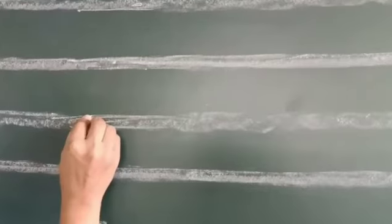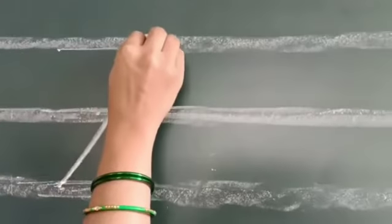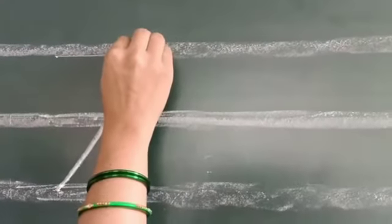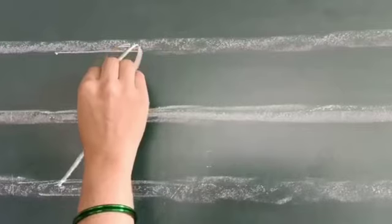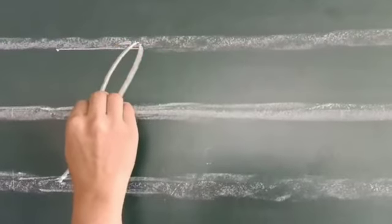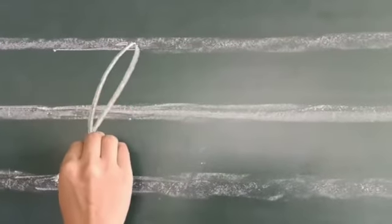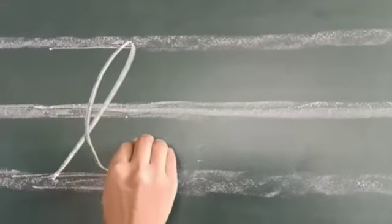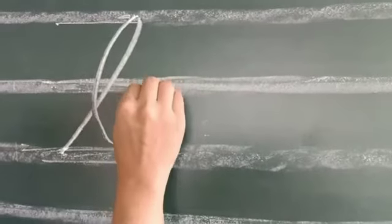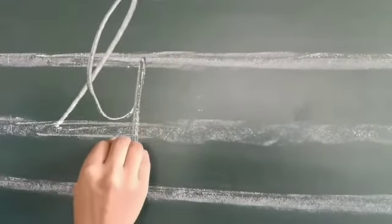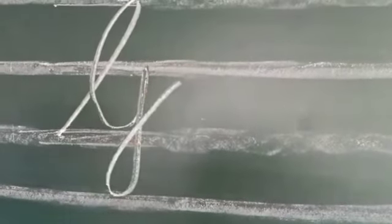This is our cursive letter G. Start by making a stroke from the third line to the top line, then make a curve up to the third line, then make a curve like this again.